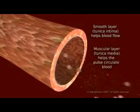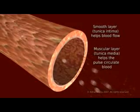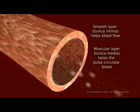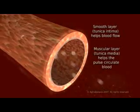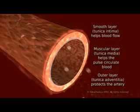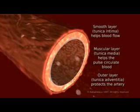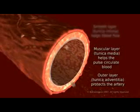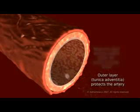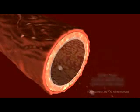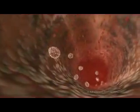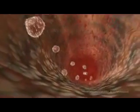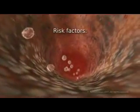A normal artery wall consists of three main layers: a thin, smooth layer that lines the inside of the artery to help blood flow; a muscular, elastic layer that helps the artery pulse to push blood around the body; and a tough outer layer to protect the artery.